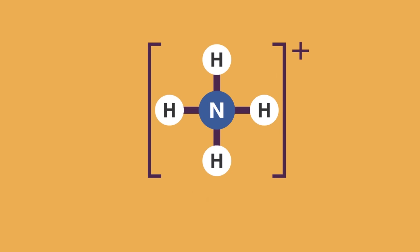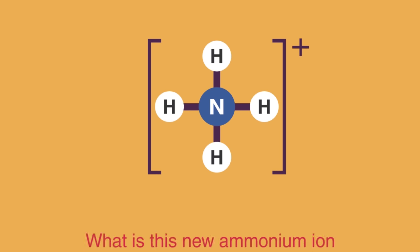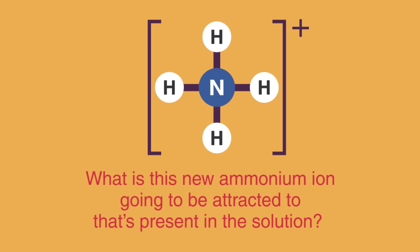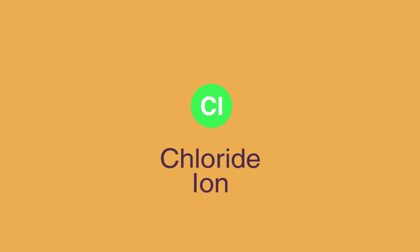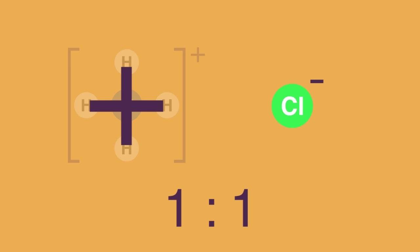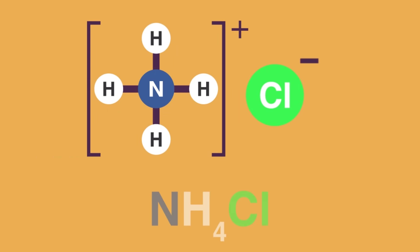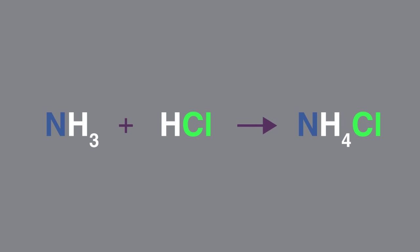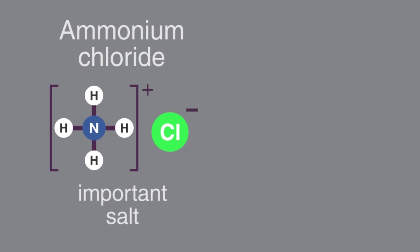We now get an ammonium ion with four hydrogens and a +1 charge. Here's another question: what is this new ammonium ion going to be attracted to that's present in the solution? The answer is the chloride ion, which has a −1 charge. Remembering your ionic bonding, the ratio is one to one — the +1 charge of the ammonium is cancelled out by the −1 of the chloride, meaning ammonium chloride has the formula NH₄Cl.